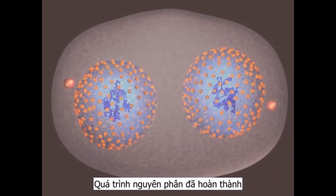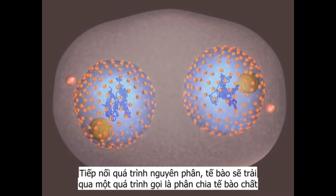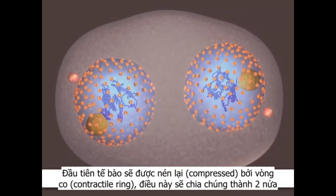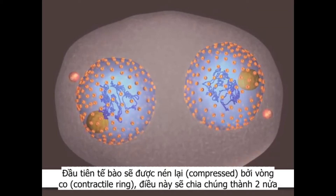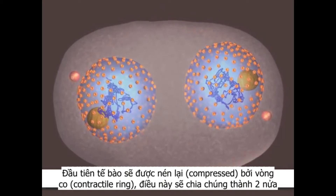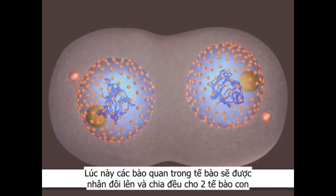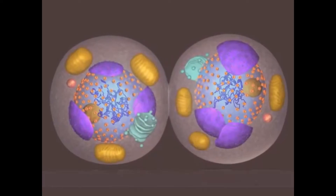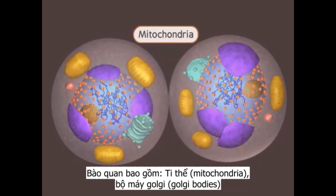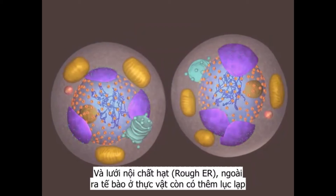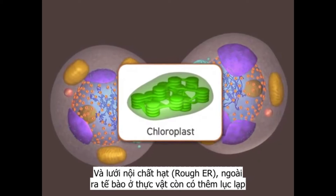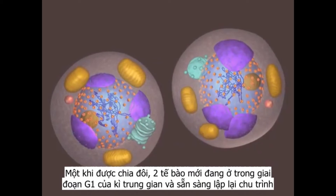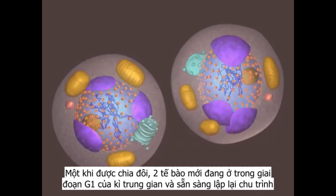The formation of two cells is all that remains. Following mitosis, the cell undergoes a process called cytokinesis. The cell is compressed by a contractile ring that divides the cell into nearly equal halves. The organelles — including mitochondria, Golgi bodies, and the rough ER — have been replicated and are divided between the two halves. Plant cells also have chloroplasts. Once split, the two new cells are fully in the G1 stage of interphase and ready to begin their growth.